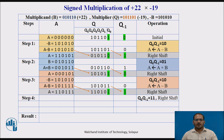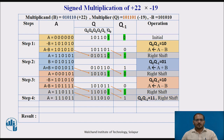In step 4, the operation depends on Q0 and Q-1, which is 1-1. So we only perform the right shift — no A plus B or A minus B is needed. The leftmost bit is kept as-is to maintain the sign of the number, and a right shift by 1 bit is performed. The values of A, Q, and Q-1 at the end of step 4 are recorded in the table.